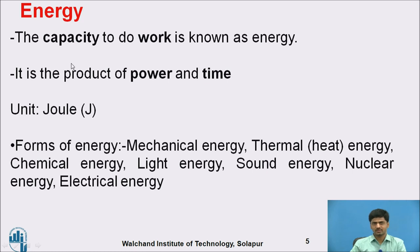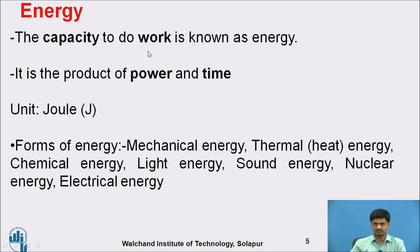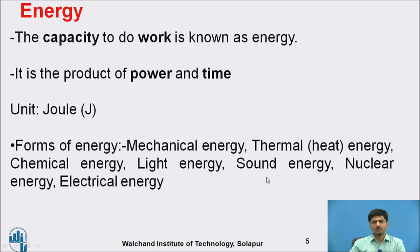What do you mean by energy? The capacity to do work is known as energy. For example, the capacity of a person to carry out a particular work is the energy of that person. Basically, energy is the product of power and time, and its unit is Joule. There are different forms of energy: mechanical energy, thermal energy (heat energy), chemical energy, light energy, sound energy, nuclear energy, electrical energy, and so on. Potential energy and kinetic energy will be discussed under mechanical energy.